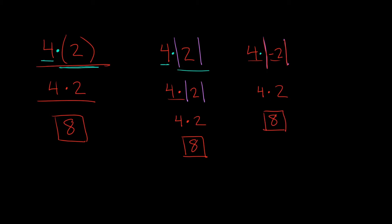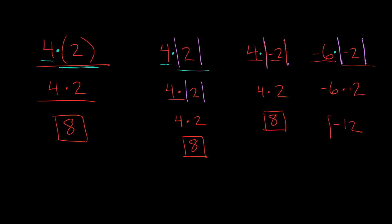If I have two absolute value bars, I solve them going left to right. So we have negative 6 next to absolute value bars containing negative 2 — that means multiply. But before we can multiply we need to simplify the absolute value: the absolute value of negative 2 is 2. So negative 6 times 2: 6 times 2 is 12, and a negative times a positive is always negative. So the answer is negative 12.